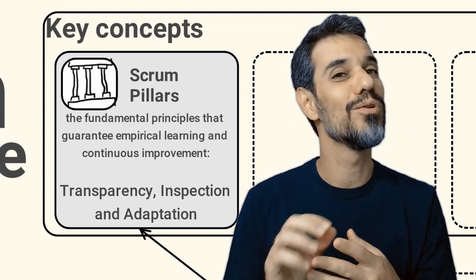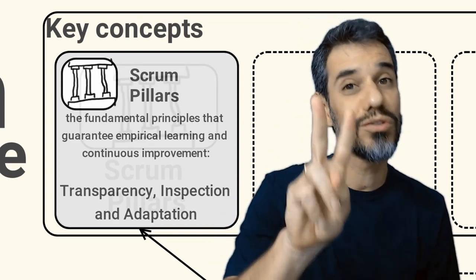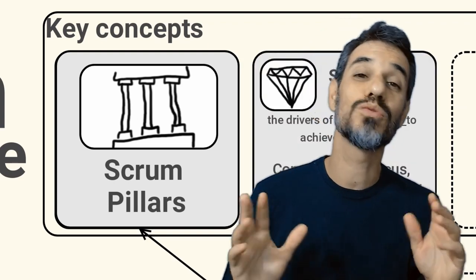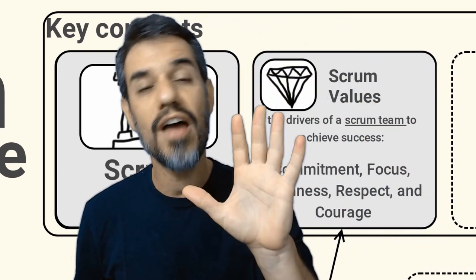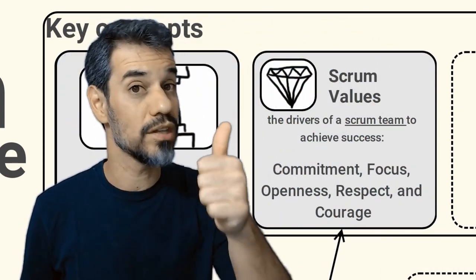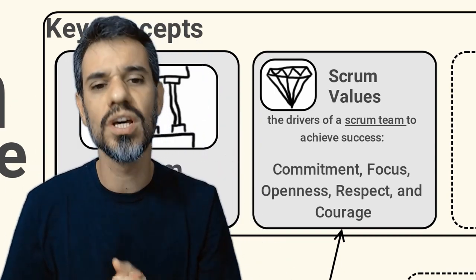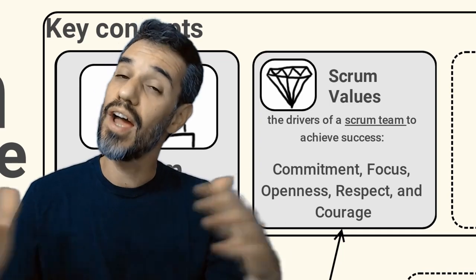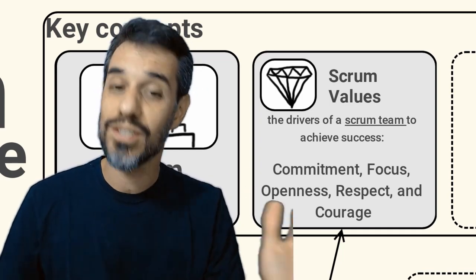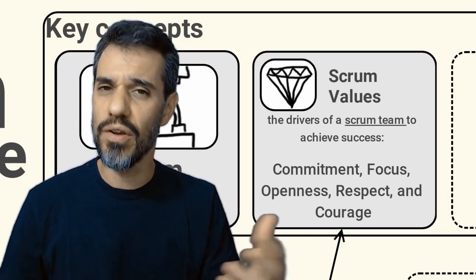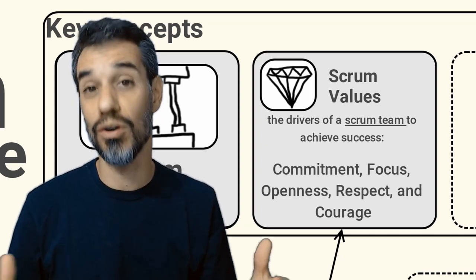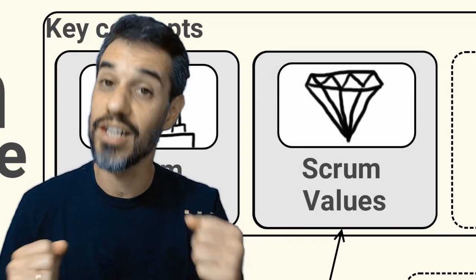Second concept of Scrum is the Scrum values. There are five values in Scrum: Commitment of the team, the focus on the objectives of the product, openness for everyone sees what's going on, respect with the team members and courage to take the decisions that are needed.